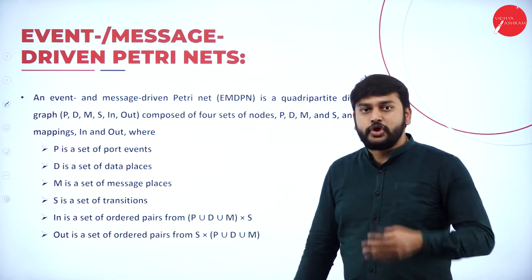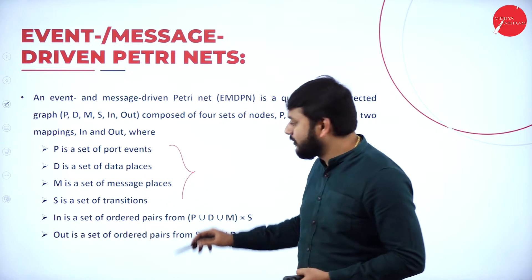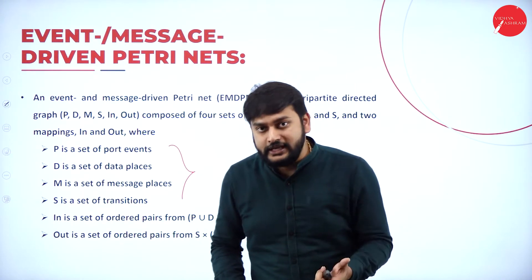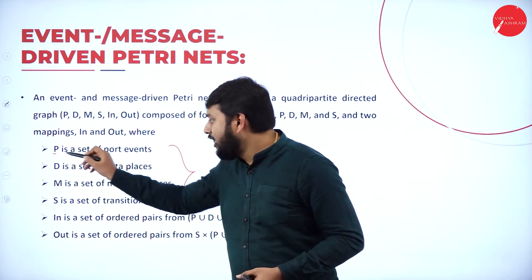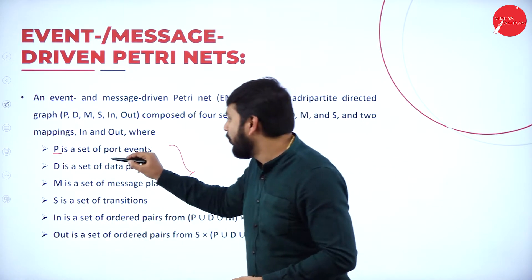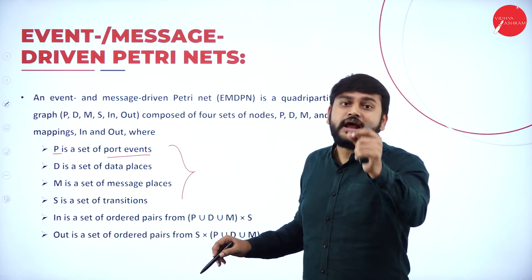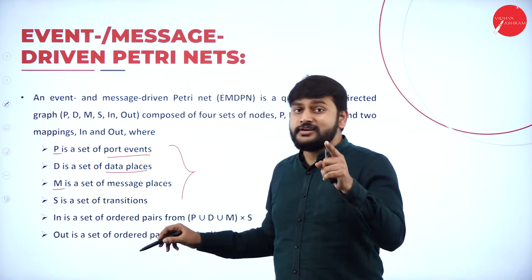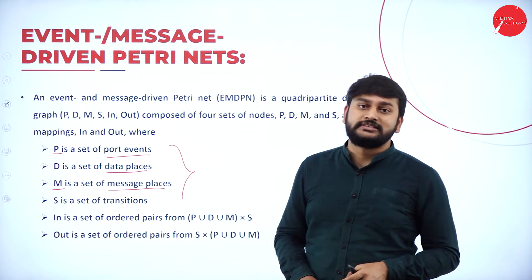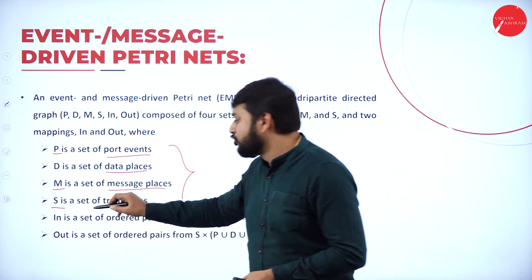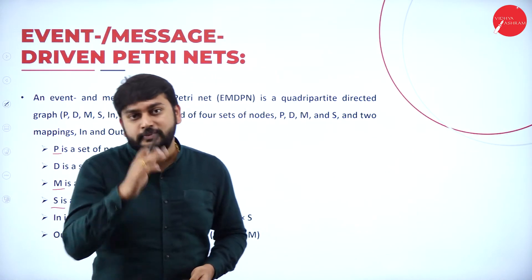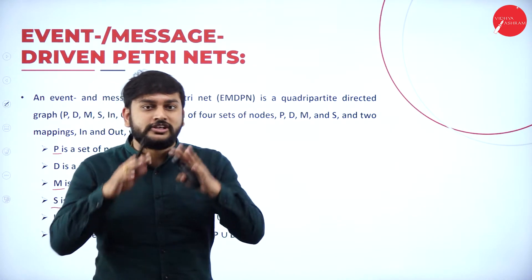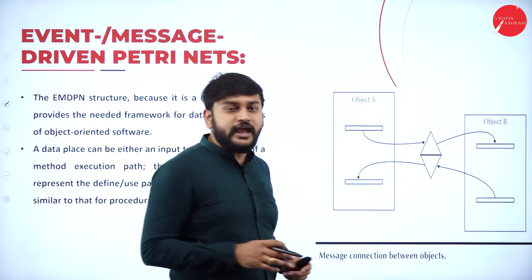In the Petri net diagram, I use specific letters to represent components. The letter P represents port events. D represents a data place. M represents message places. S represents a transition. These are the different notations and letters used to explain the concept of the Petri net diagram.